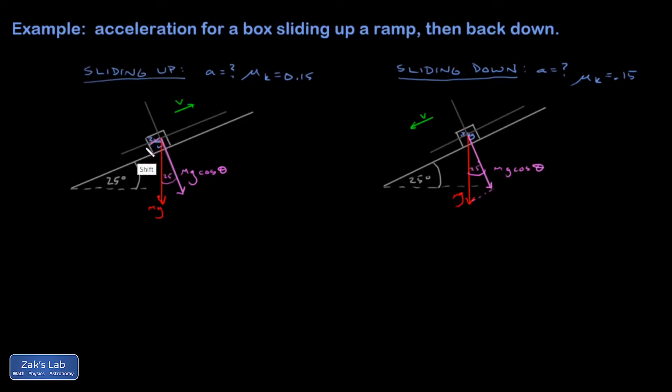That means that component has a magnitude of mg cosine theta. Then I have my parallel component pointing down the ramp, roughly that long. That's an mg sine theta. It's starting to get obliterated, but the numerical value for the mass is 3 kilograms.